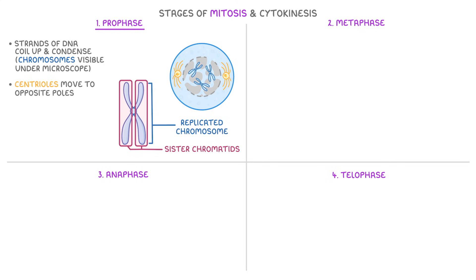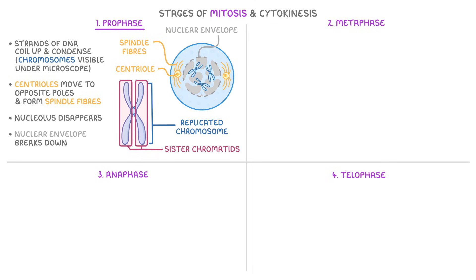At the same time as the chromosomes condense, small structures called centrioles move to opposite poles of the cell — one centriole ends up at one end and the other at the opposite end. They begin to form spindle fibers, which are thin thread-like strands that will pull the replicated chromosomes apart later on during mitosis. Meanwhile, the nucleolus disappears and the nuclear envelope breaks down, meaning the chromosomes are now floating freely within the cell's cytoplasm.